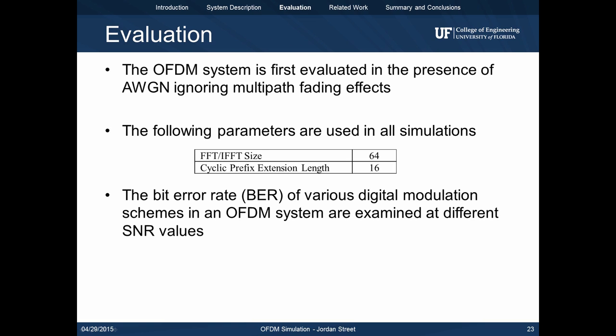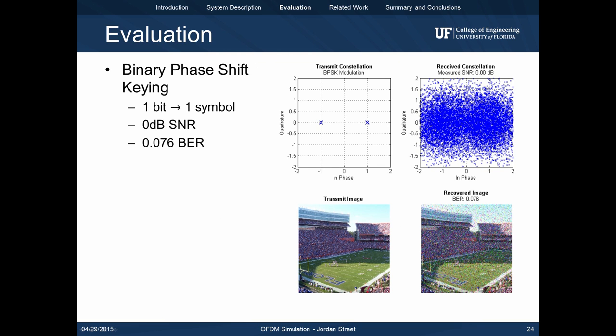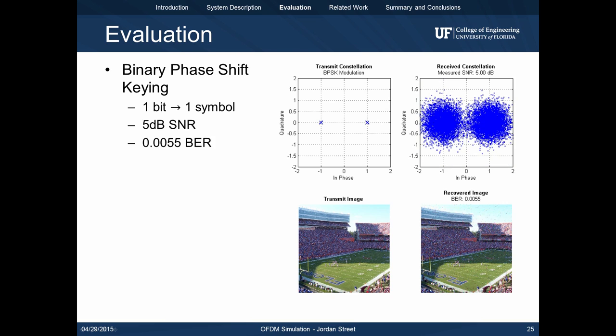We now simulate the OFDM system in MATLAB, first ignoring multipath fading effects. We use an FFT of size 64 and a cyclic prefix extension of length 16. The bit error rates for various digital modulation schemes in OFDM are examined at different SNR values. We first look at binary phase shift keying. BPSK consists of two points on the in-phase axis opposite the quadrature axis and maps one bit to one symbol. For 0dB SNR, we achieve a bit error rate of 7.6%. By increasing the SNR to 5dB, we can reduce the BER down to 0.55%.